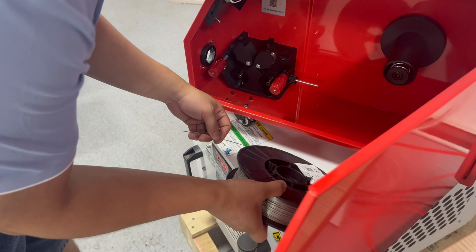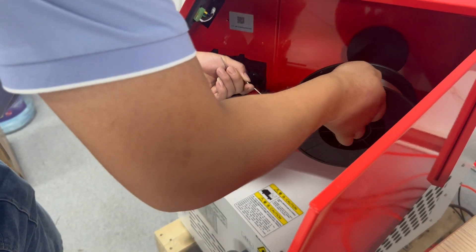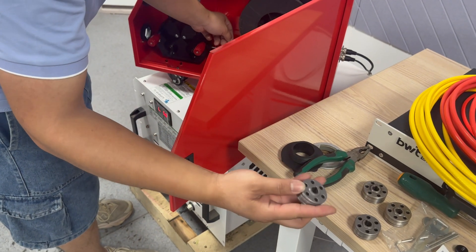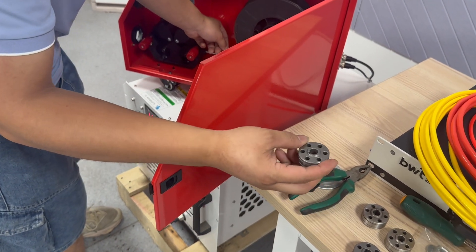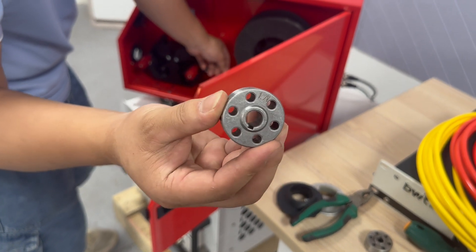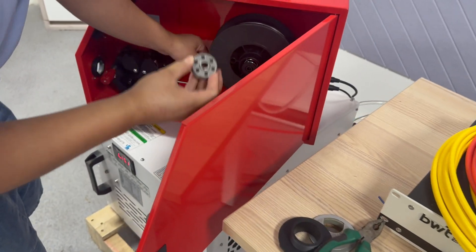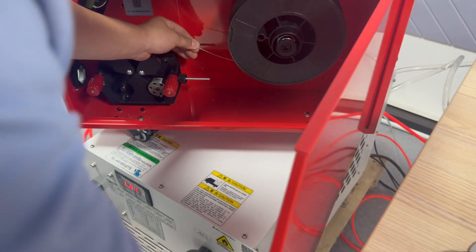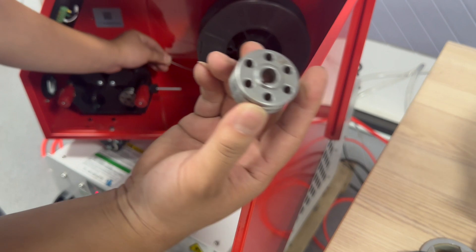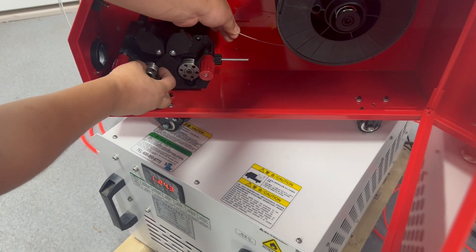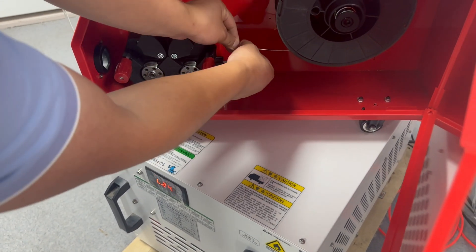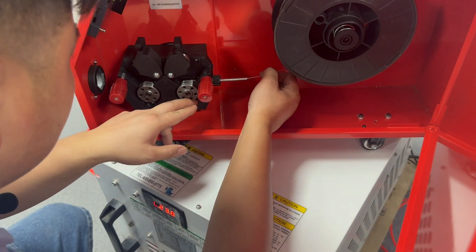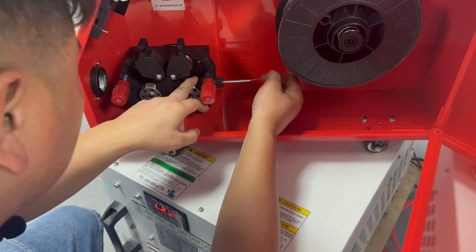There are something here we put in before starting. We need to choose the right wire fitting wheel. It says 1.2 for groove width, put it in. This one also 1.2. Then thread the wire through here.